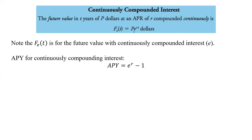This uses the e function — e raised to some power. This is usually just called the PERT equation because P·e^(rt) can be written as 'pert' all in one line. That's usually how we remember it: PERT.